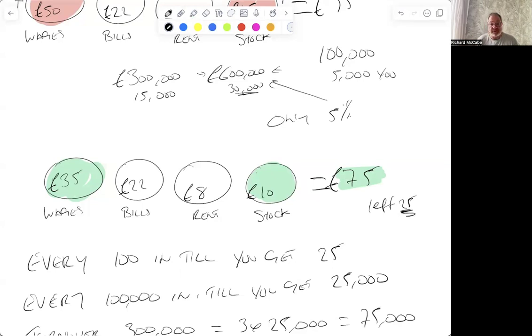Now, see the difference in this. So for every £100 that goes in the till now, you make £25, not £5. It doesn't sound like a big difference between £5 and £25, but let's start getting a bit serious. For every £100,000 that your business does, you get to keep £25,000. Now, that's almost the same. If you look at this scenario up here, take a look at this.